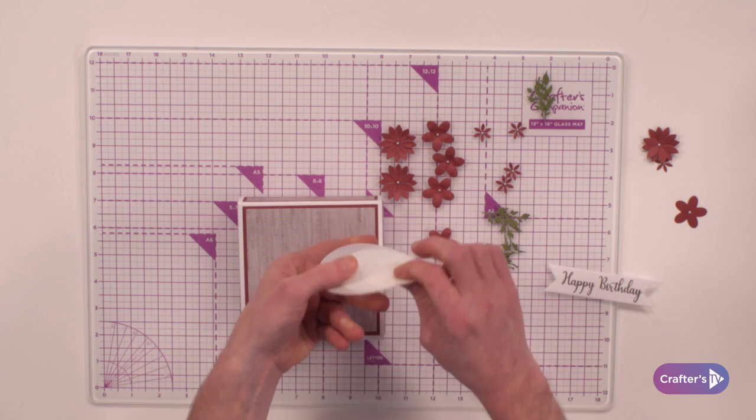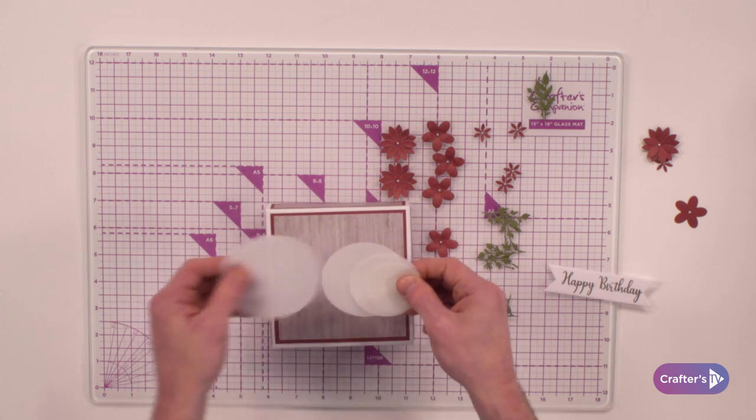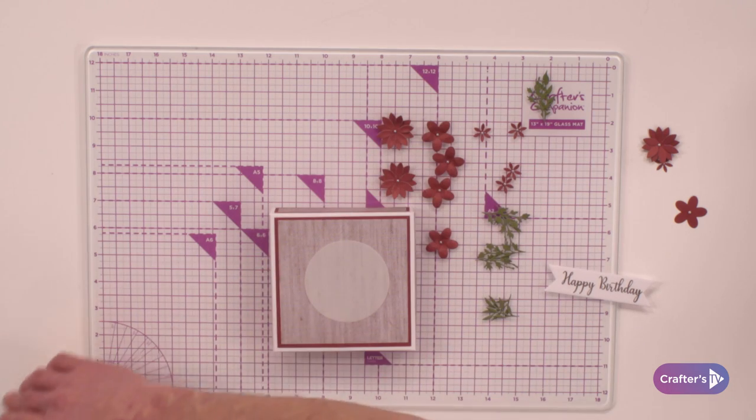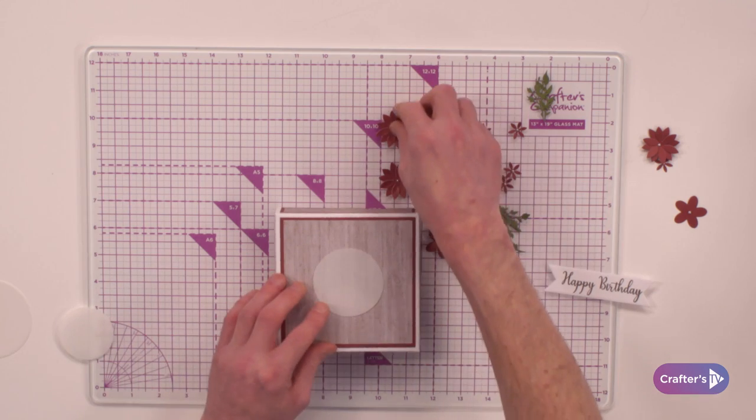You can ink around them if you want to create a shadow, but what these are also good for as well is for you to position into place.